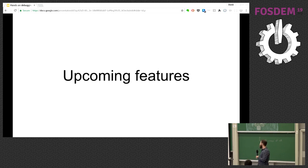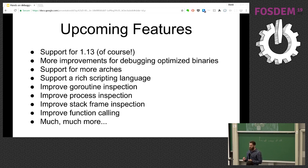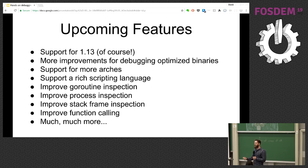Another thing I want to talk about is upcoming features — things we'd like to do within the next year. Some of the big things: support for Go 1.13 of course, which should be coming out next year, improving debug information upstream, and improving how we parse and use that information. If you're ever interested in upstream debugging changes, you can go to the Go issue tracker on GitHub where there's a debugging label. We also want to continue adding support for debugging optimized binaries.